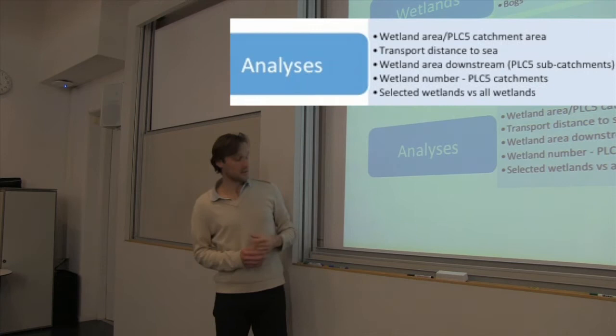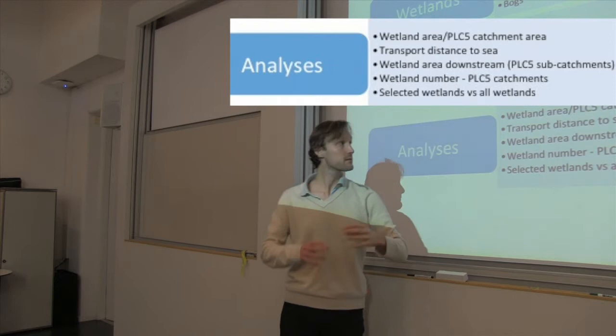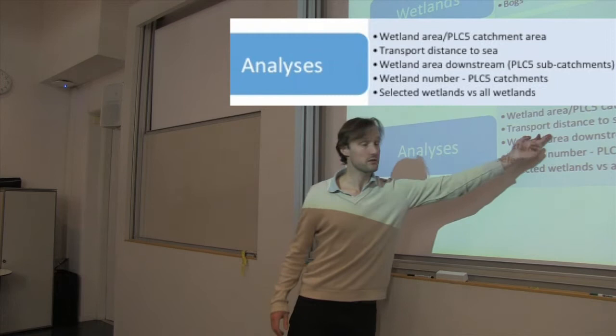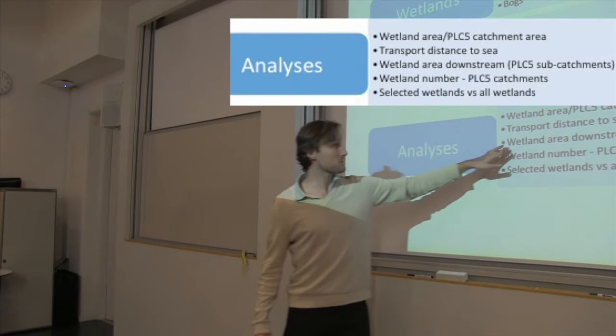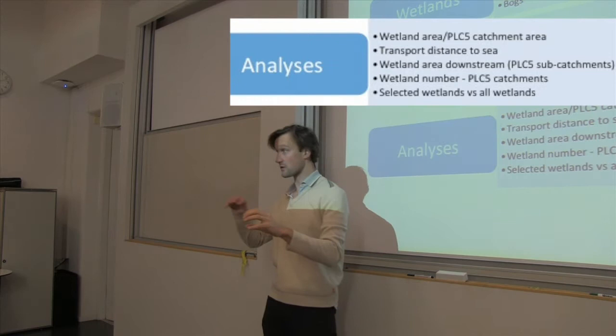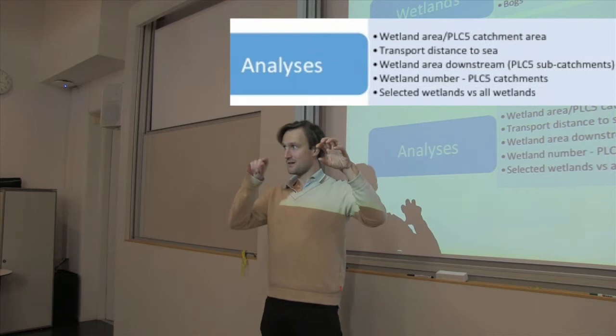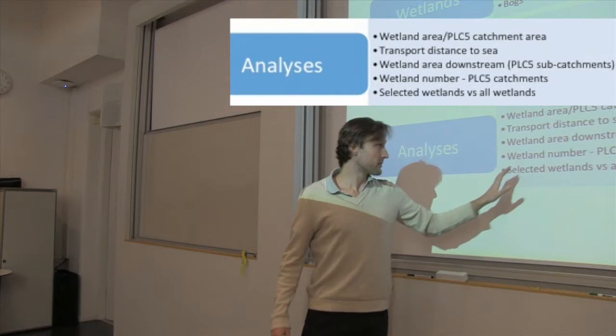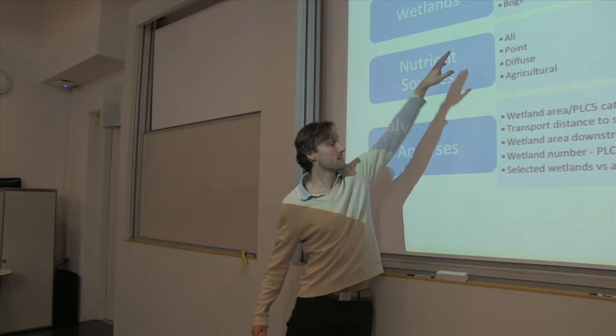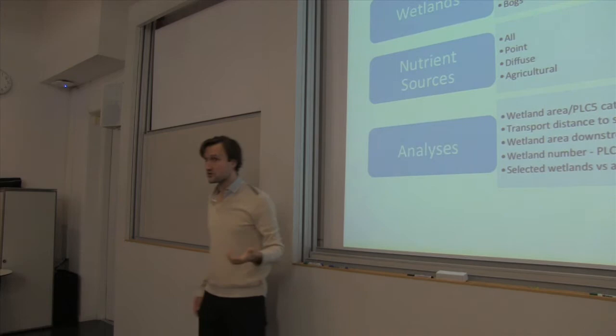These are the analyses we looked at. The main one was the wetland area within a catchment divided by the catchment area. We also looked at the transport distance to the sea along the flow network. We also did another analysis taking into consideration that downstream wetlands might have an effect — not just the catchment, but that catchment and all the wetlands to the sea. We looked at the number of wetlands and selected some compared to all of them; bogs, for example, are known to release nutrients.